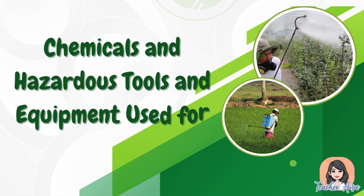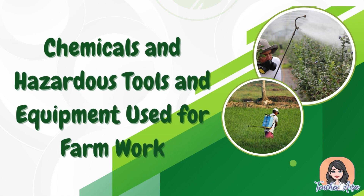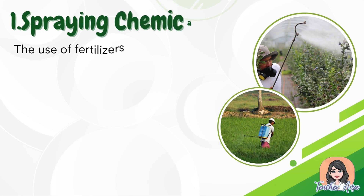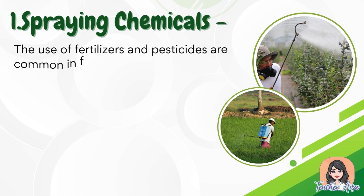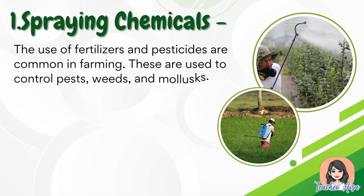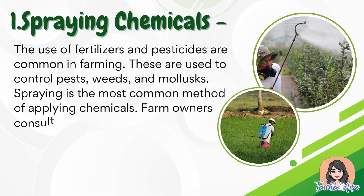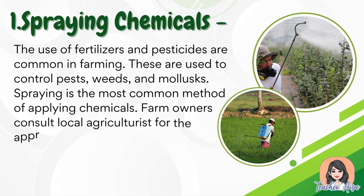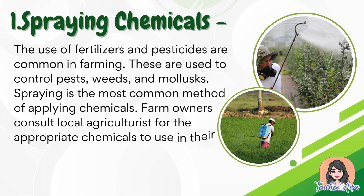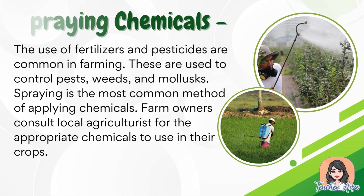Here are the chemicals and hazardous tools and equipment used for farm work. Spraying chemicals — the use of fertilizers and pesticides is common in farming. These are used to control pests, weeds, and molluscs. Spraying is the most common method of applying chemicals. Farm owners consult local agriculturists for the appropriate chemicals to use on their crops.